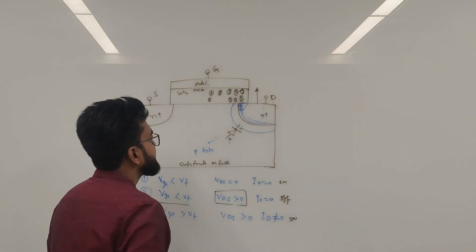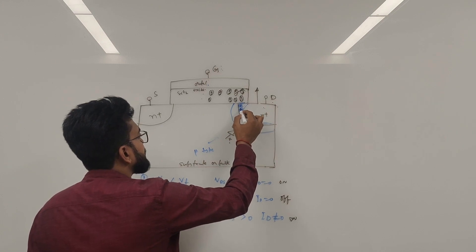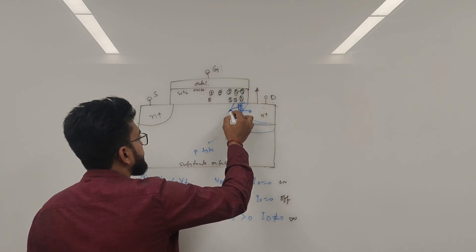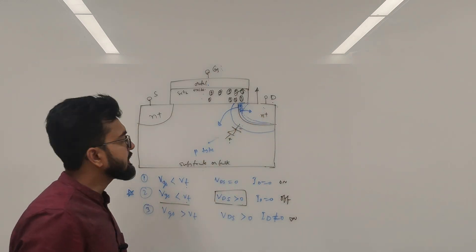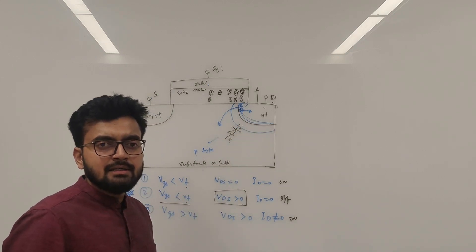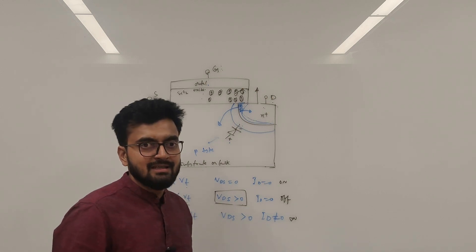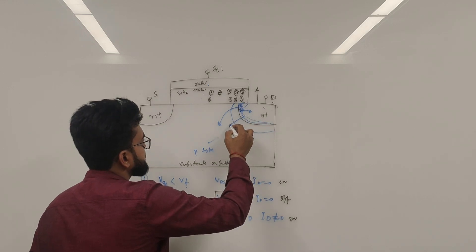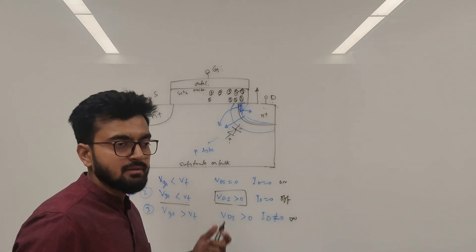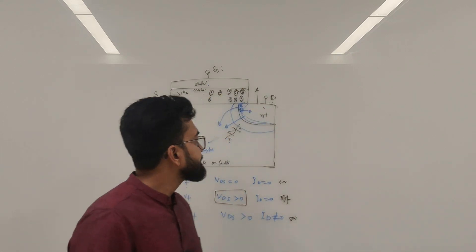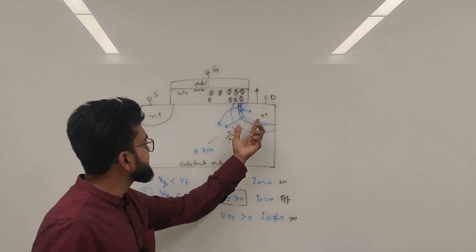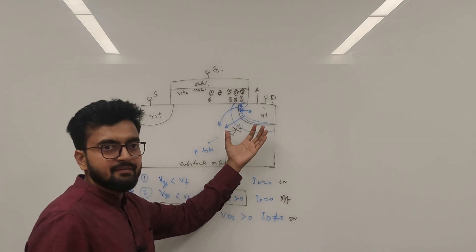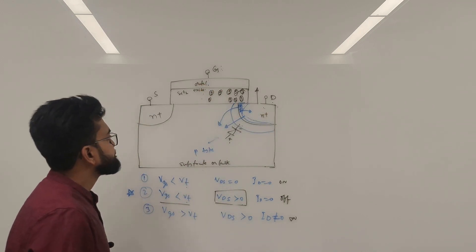As we increase the potential, the electrons move into the drain and holes go into the substrate. As we know, the direction of conventional current is from positive to negative, therefore the leakage current flows from drain to substrate. The GIDL current is essentially the current that flows from the drain to the substrate in the presence of an electric field developed due to the potential difference between the drain and the gate.